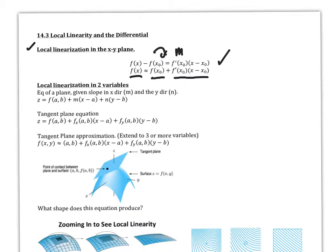Now we're moving into two variables. We have the equation of a plane: some initial value, slope in the x direction, slope in the y direction — that was the equation we derived for a plane. So if we want to do a tangent plane, all we have to do is take that same equation and put it into the form with the differential. This is the differential of x, which is x minus a, and this is the differential of y, which is y minus b. So: initial value plus the change in the x direction plus the change in the y direction gives us a tangent plane equation.